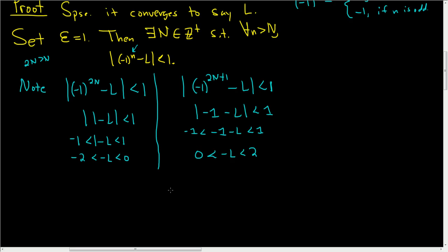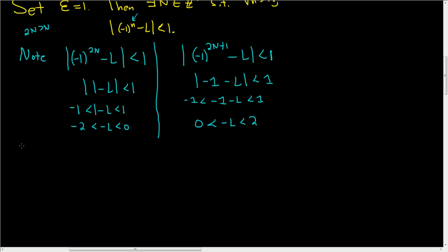So we have this condition here tells us that -L is in the interval (-2, 0). And this condition here is also true. It tells us that -L is in the interval (0, 2). So -L is in the intersection of (-2, 0) and (0, 2). But this intersection is empty.